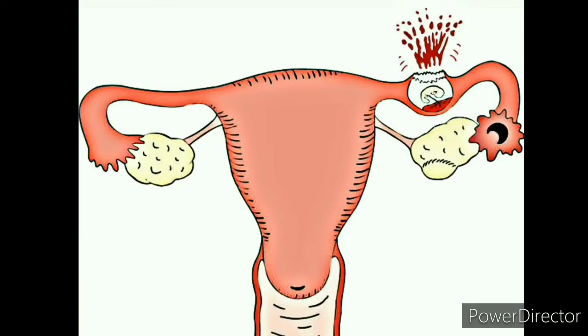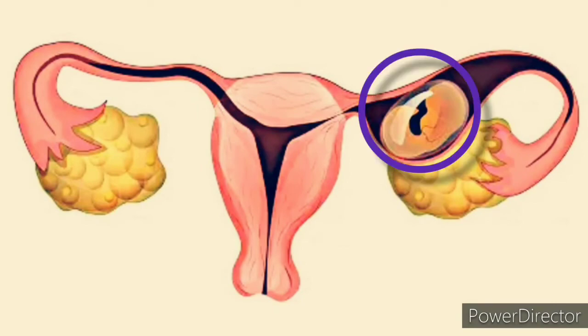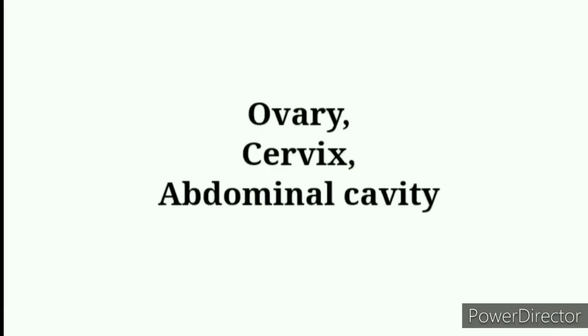That's why, if it is not diagnosed in time — more or less between 6 and 16 weeks — the fallopian tube will rupture. The fallopian tube is the most common site for the development of ectopic pregnancy. Other less common sites are the ovary, cervix, and abdominal cavity.